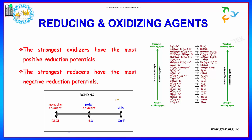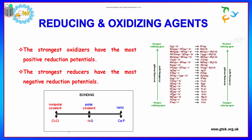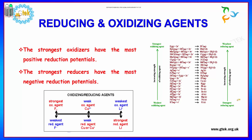Now we are talking about reducing and oxidizing agents. The strongest oxidizing agent will have the most positive reduction potential, while the strongest reducing agent has the most negative reduction potential. As shown, the species with the strongest oxidizing ability is the weakest reducing agent, and vice versa.